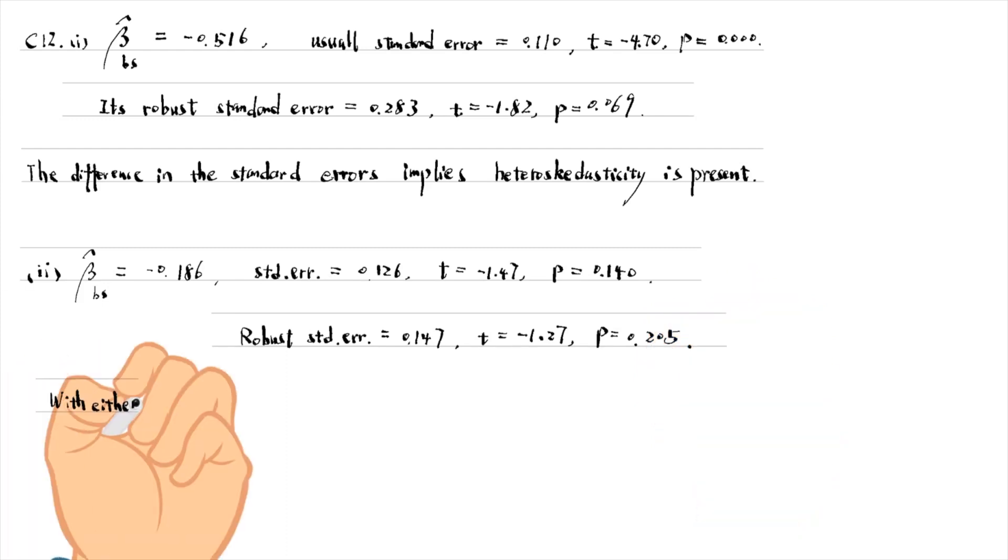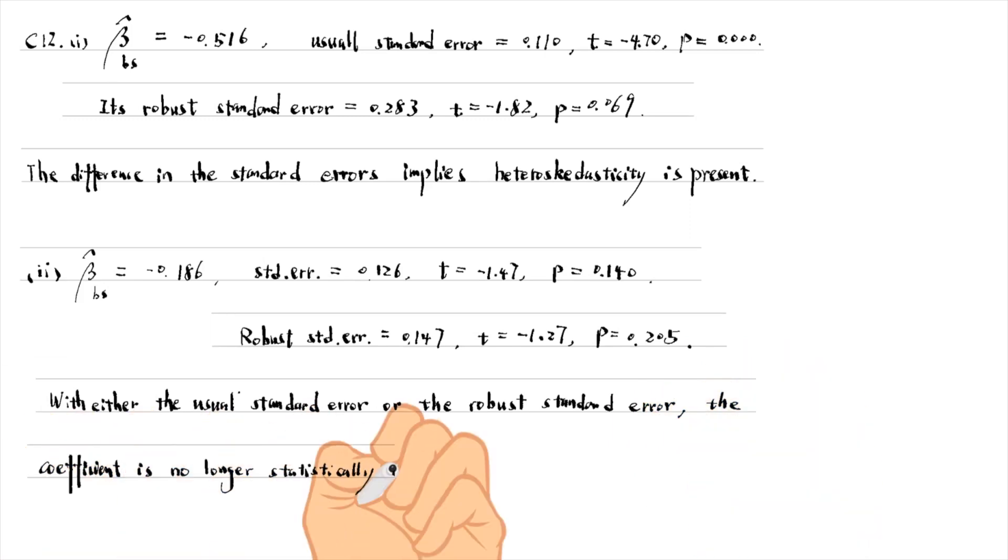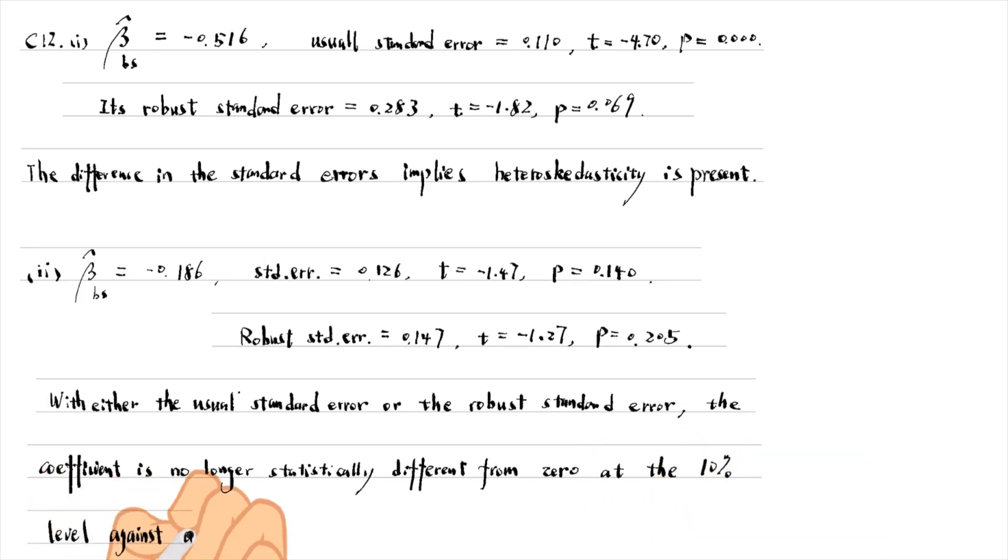With either the usual standard error or the robust standard error, the coefficient is no longer statistically different from 0 at the 10% level, against a two-sided alternative.